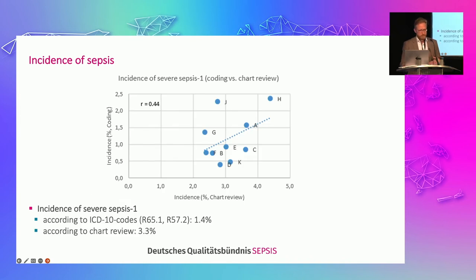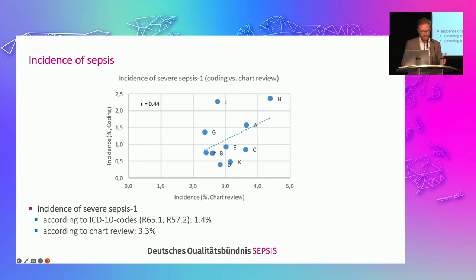Looking at incidence: the overall incidence by chart review was 3.3% among all hospital admissions. If we estimate incidence based on ICD-10 codes, we would only arrive at 1.4% incidence. The graph shows the correlation between information from charts and from administrative coding — comparing these hospitals, the coded information has only little correspondence with the information in the charts.